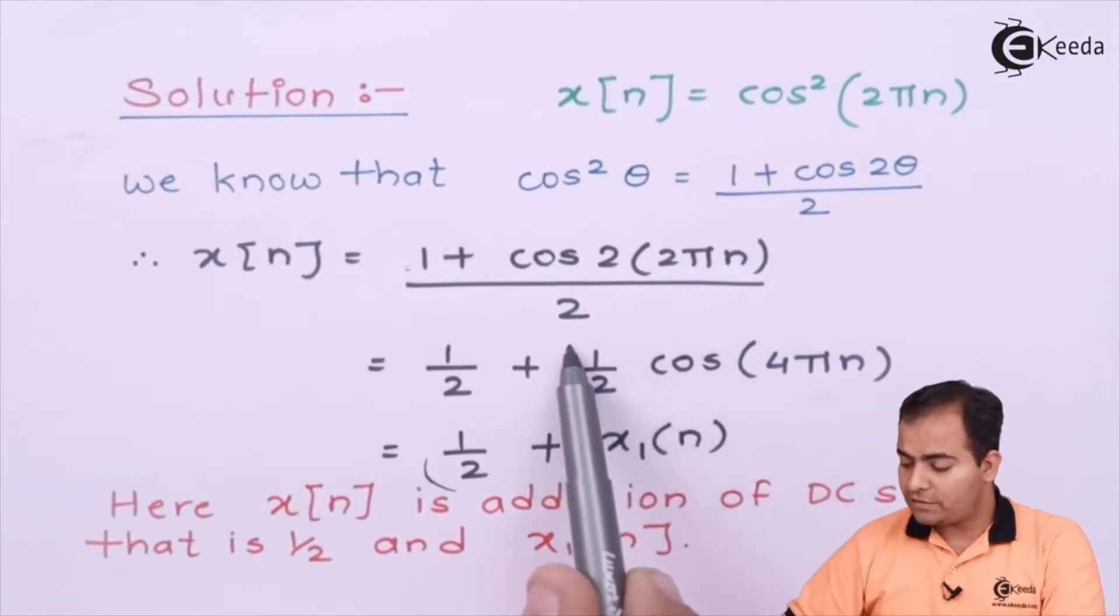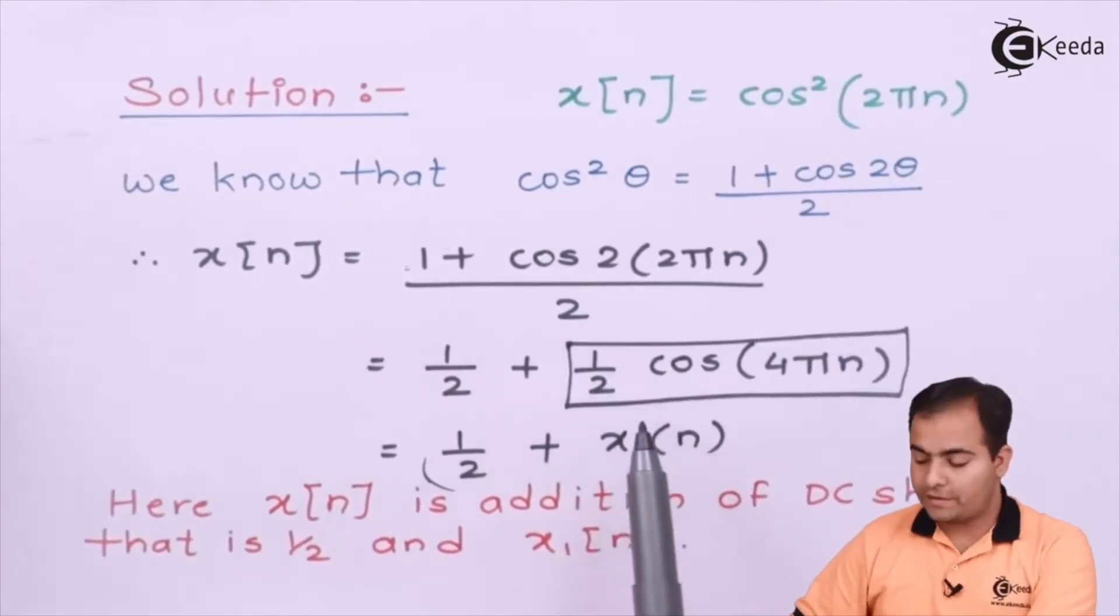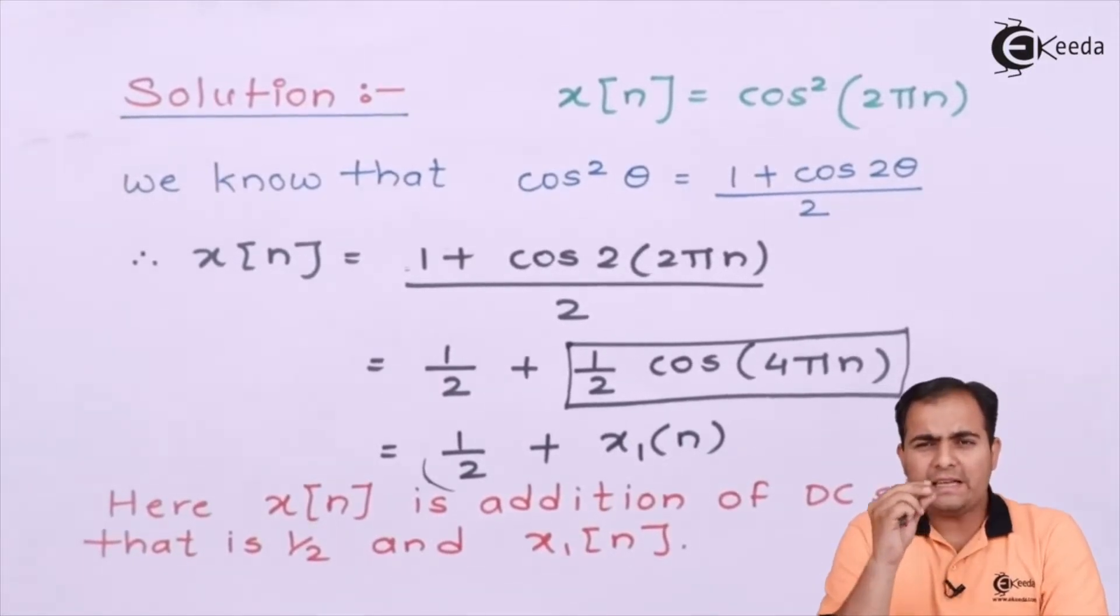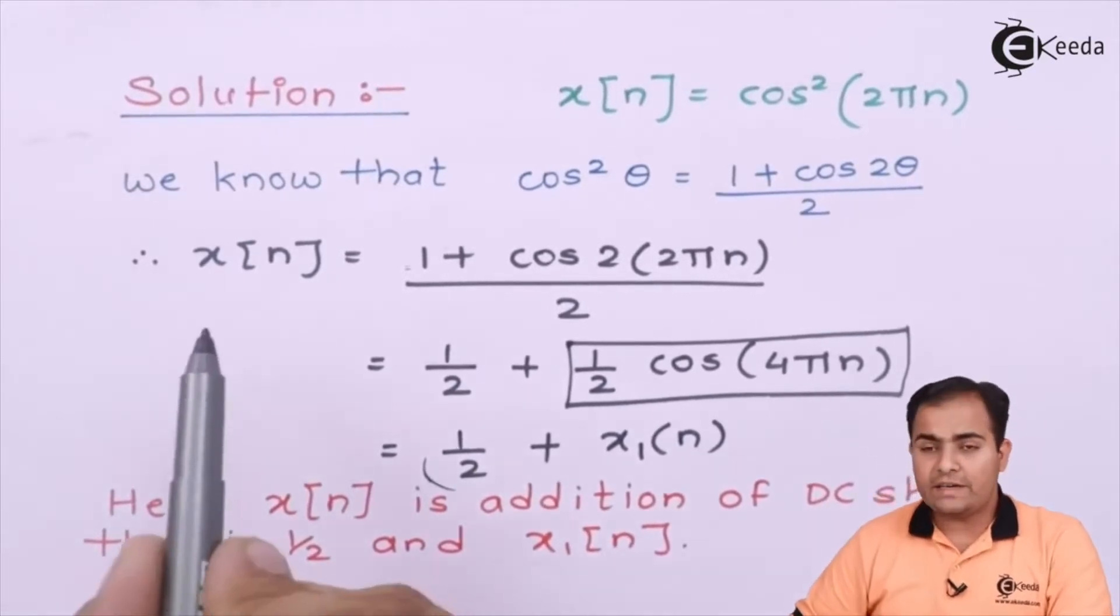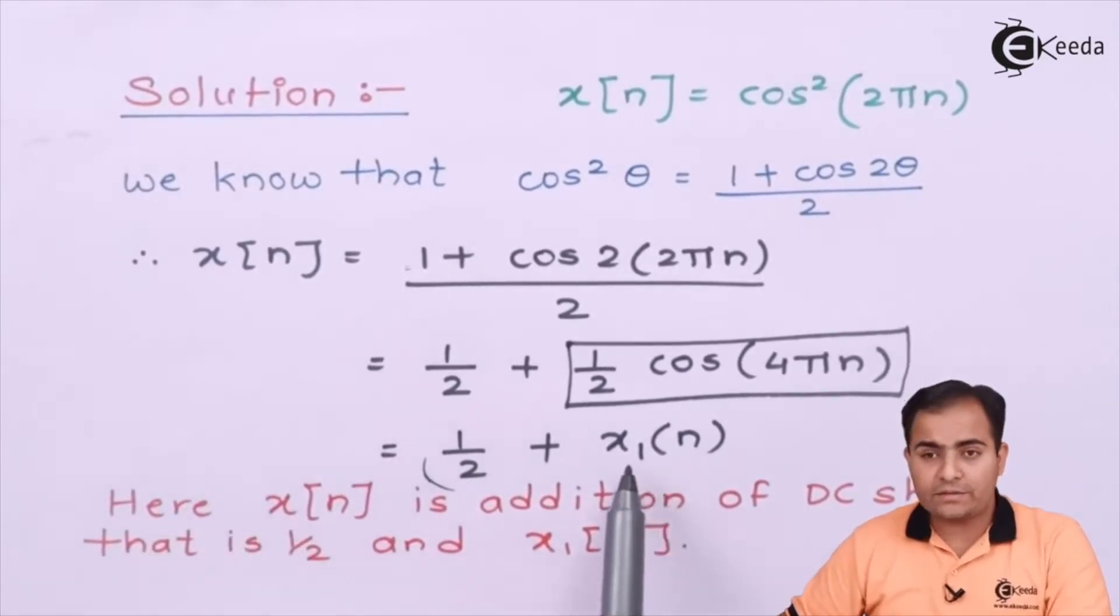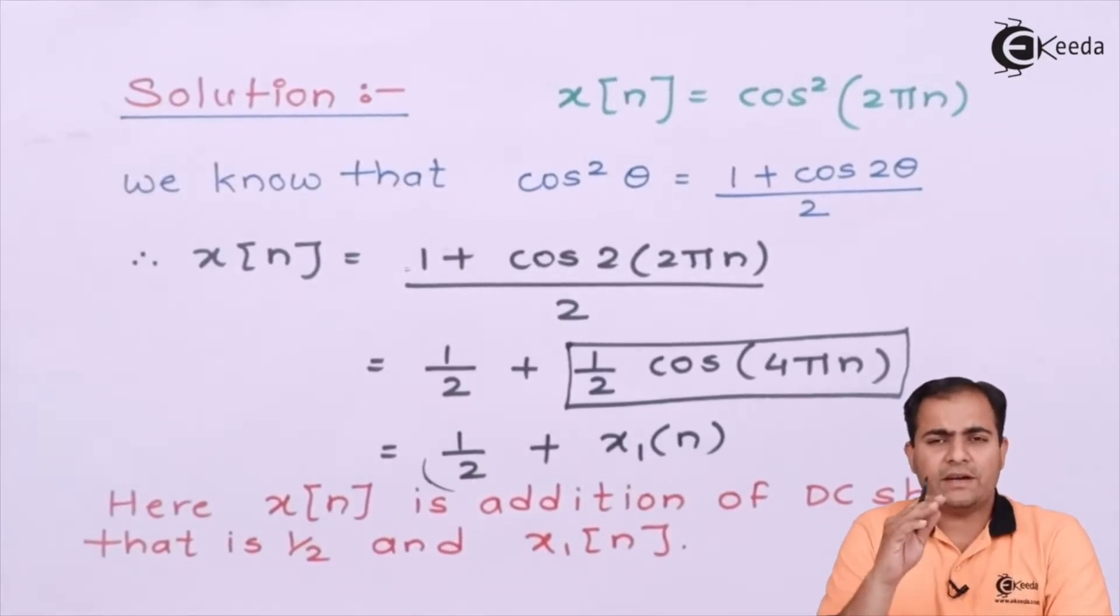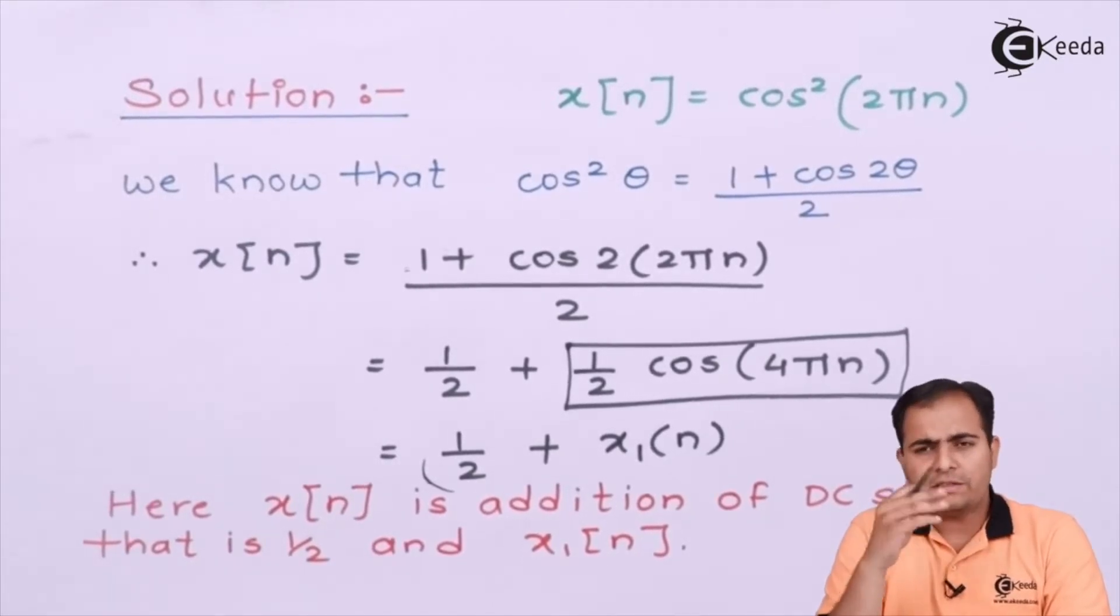After separating the base, you will get a half. I have considered this whole part as my x[n]. Now what is half? Half is nothing but one DC amplitude added in x[n]. When DC amplitude is added in x₁[n], the function will not get affected whether it is periodic or non-periodic.